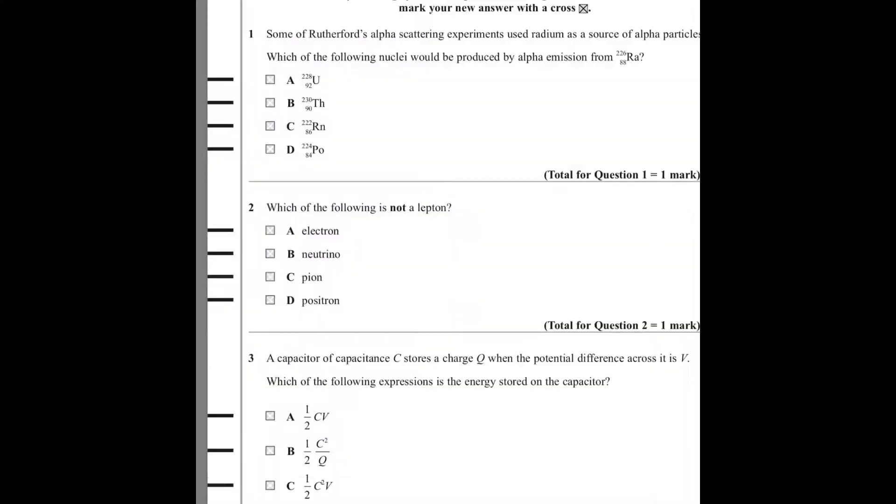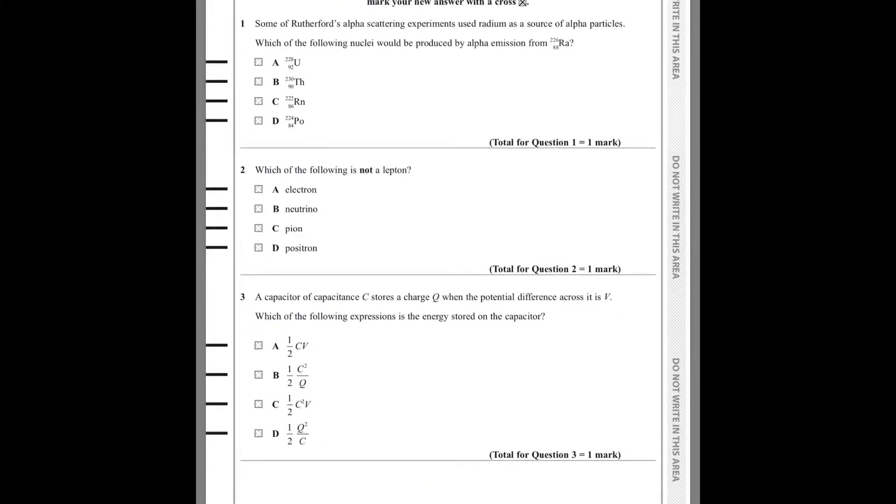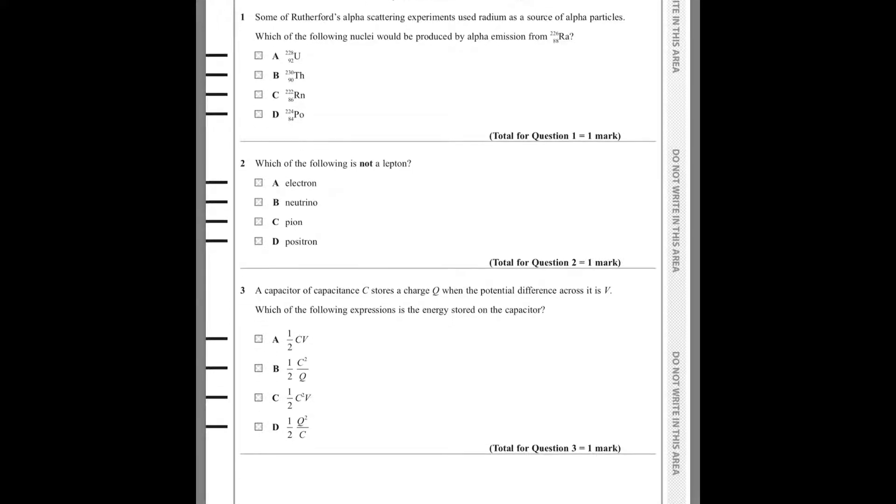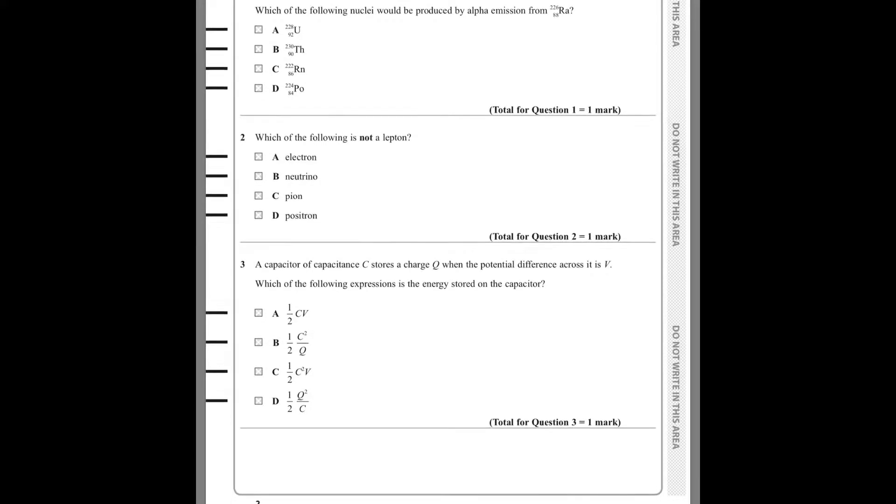Number 3: a capacitor of capacitance C stores a charge Q when the potential difference across it is V. Which of the following expression is the energy stored on the capacitor? This is a quite straightforward question. The correct equation is D.